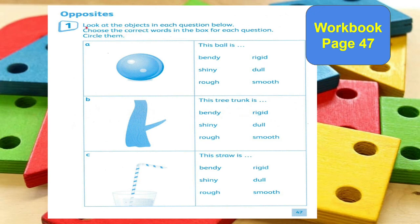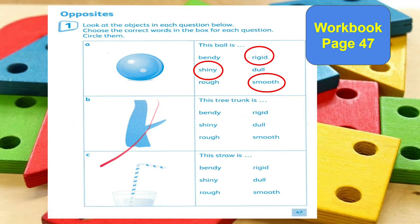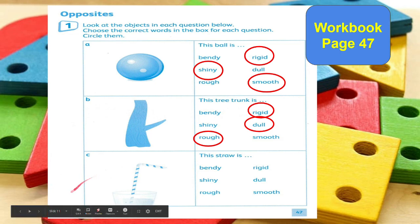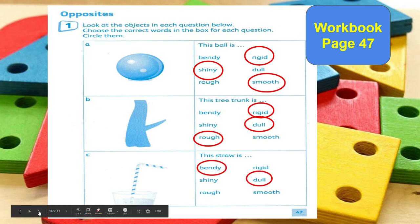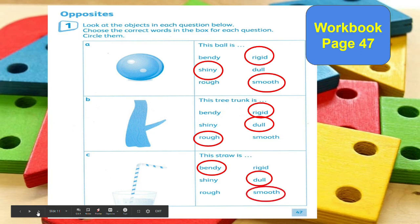Workbook page 47, Opposites. This ball is shiny, rigid, and smooth — that is how we describe the material for the ball. The tree trunk is rough, rigid, and dull. How about the straw? The straw is bendy — you can move it left and right — and it is also dull and smooth.